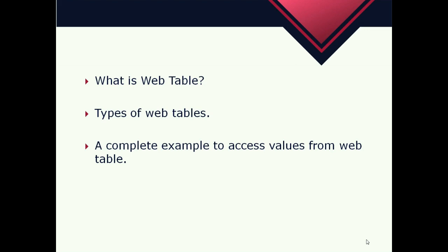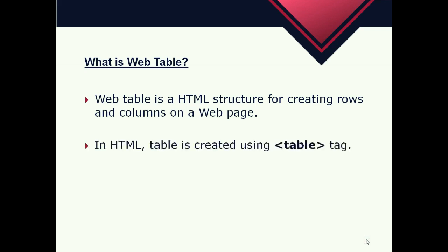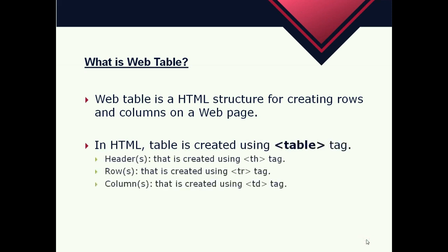So first, what is a web table? A web table is an HTML structure for creating rows and columns on a web page. In HTML, a table is created using the table tag and it contains three things: the header which is created using the th tag, rows which are created using the tr tag, and columns which are created using the td tag.